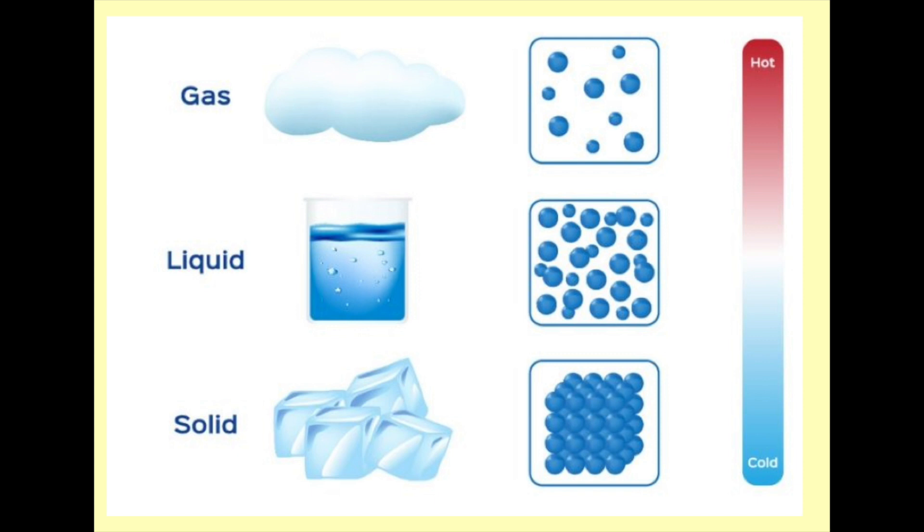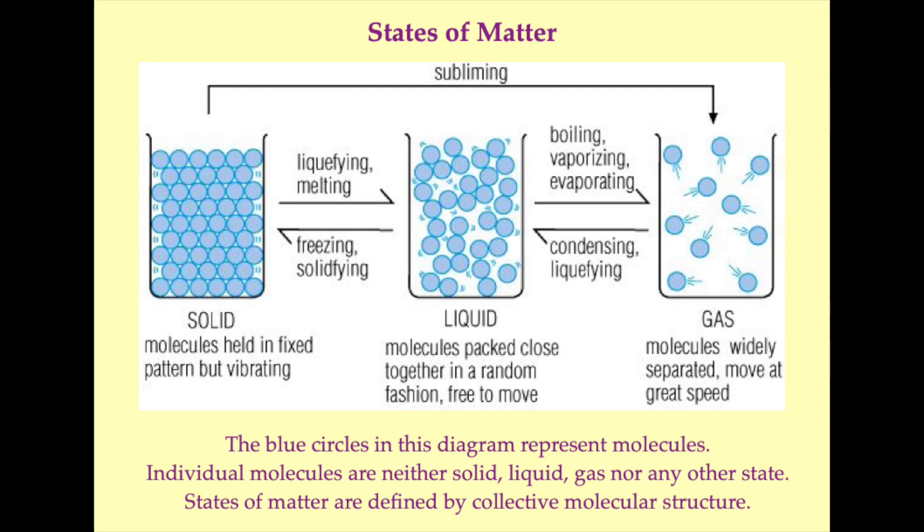In observed reality we note that at low temperatures water assumes a solid configuration which we call ice. As ice is warmed it transitions into its more familiar liquid phase, and as it is warmed further still it transitions into water vapor, a gas. The same transitions from solid to liquid to gas are observed in a broad variety of materials. These three phases constitute what are known as the classical states of matter. More exotic states of matter do exist, such as plasmas and Bose-Einstein condensates, but we will not discuss these materials here.